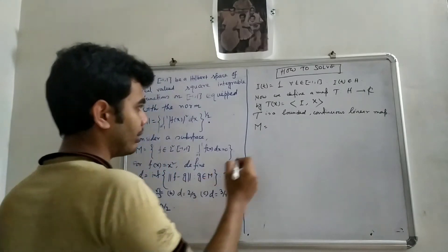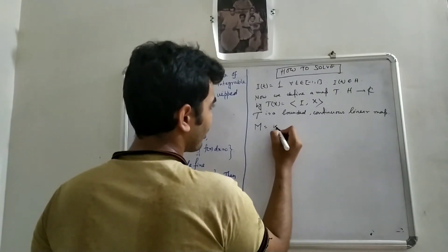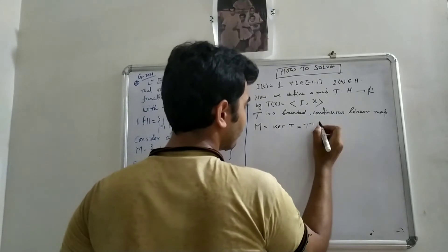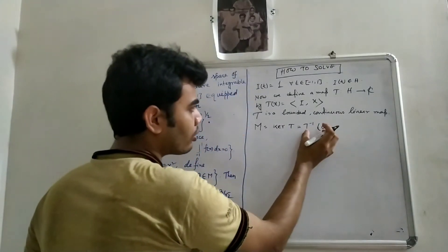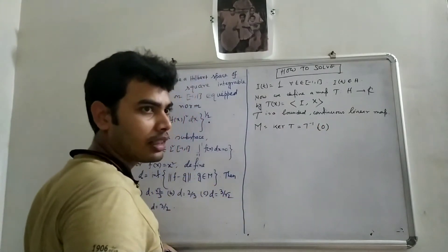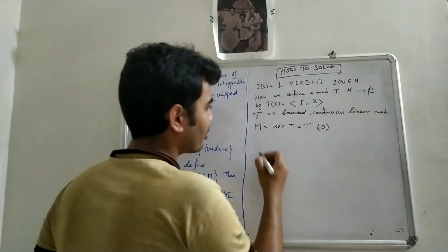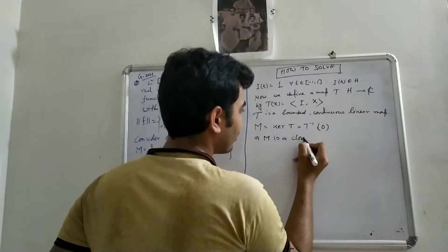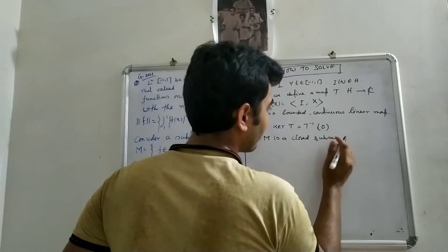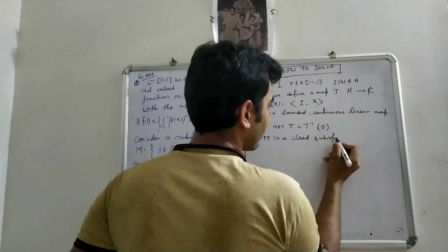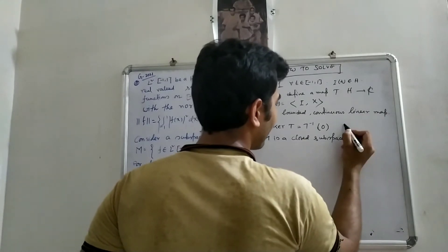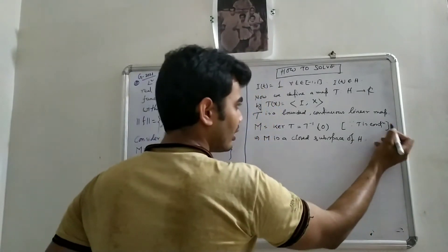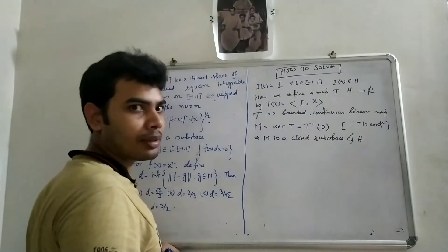The subspace M is the kernel of T, i.e., M = ker(T) = T⁻¹({0}). Since T is continuous and {0} is a closed set, T⁻¹({0}) is also closed. Therefore M is a closed subspace of H.